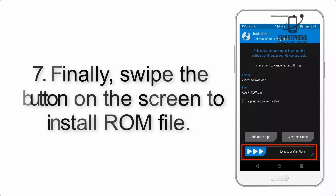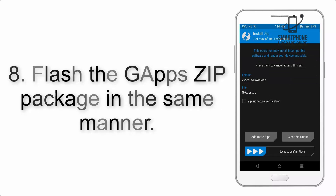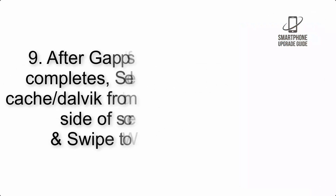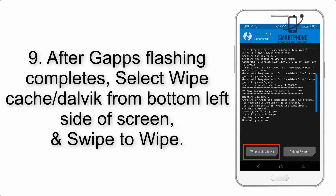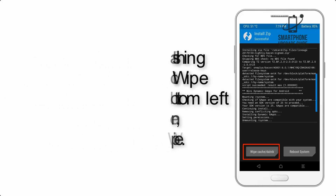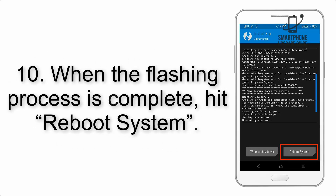Step 7: Swipe the button on the screen to install the ROM file. Step 8: Flash the GApps zip package in the same manner. Step 9: After GApps flashing completes, select Wipe Cache and Dalvik from the bottom left side of the screen and swipe to wipe.